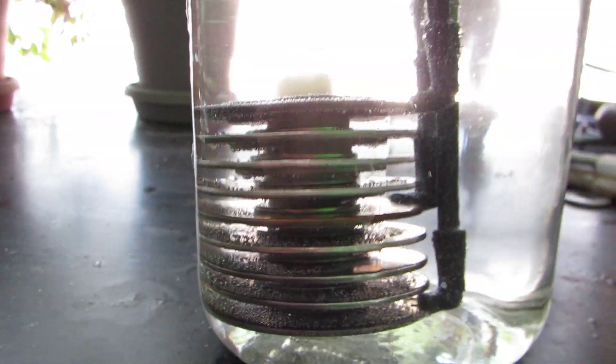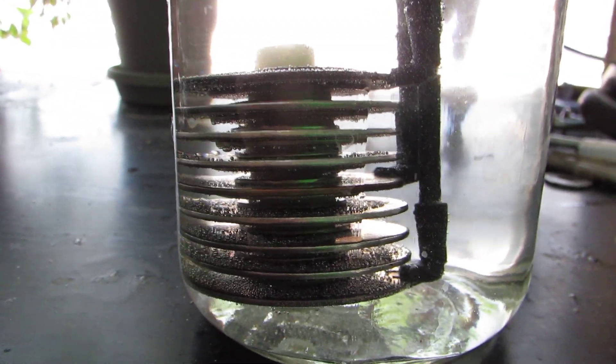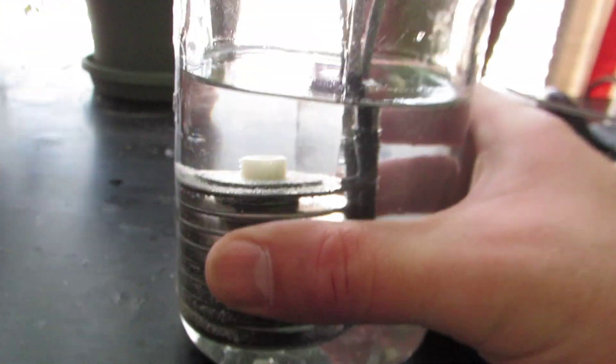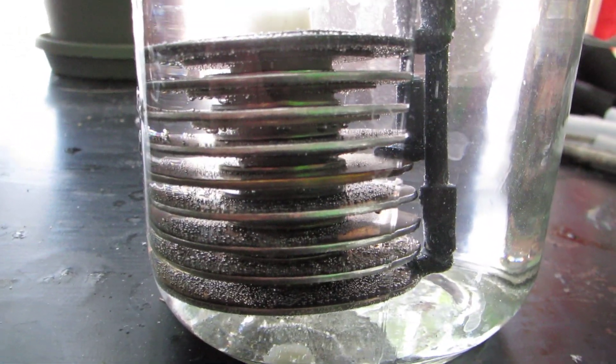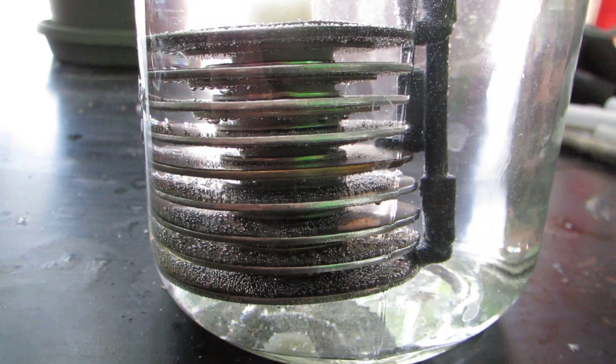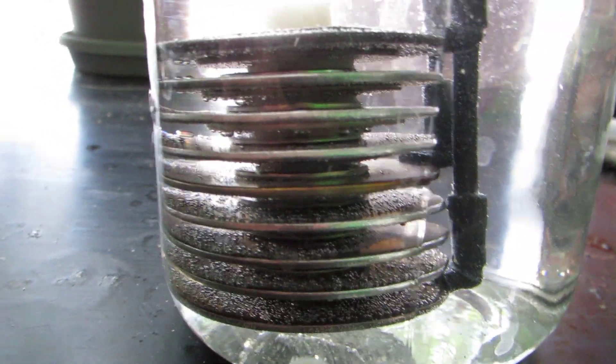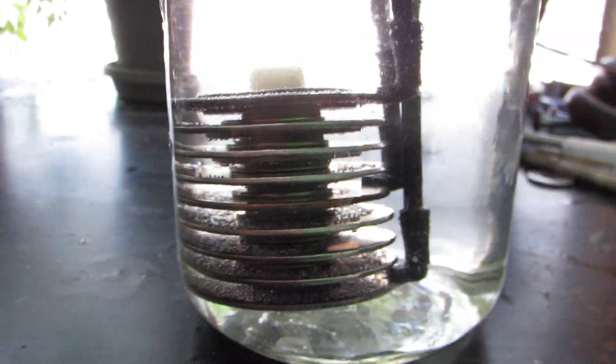I decided to pull the cell out and test it as a wet cell. I put it in here and added two teaspoons of KOH, potassium hydroxide, and this is the result I'm getting.